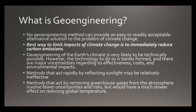No geoengineering method can provide an easy or readily acceptable alternative solution to the problem of climate change, and the best way to limit the impacts of climate change is to immediately reduce carbon emissions. Geoengineering of the Earth's climate is very likely technically possible, however the technology is barely formed and there are major uncertainties regarding its effectiveness, costs, and environmental impacts. Methods that act rapidly by reflecting sunlight may be relatively ineffective over the long run; methods that remove greenhouse gases from the atmosphere involve fewer uncertainties but have a much slower effect on global temperature — so there are trade-offs.